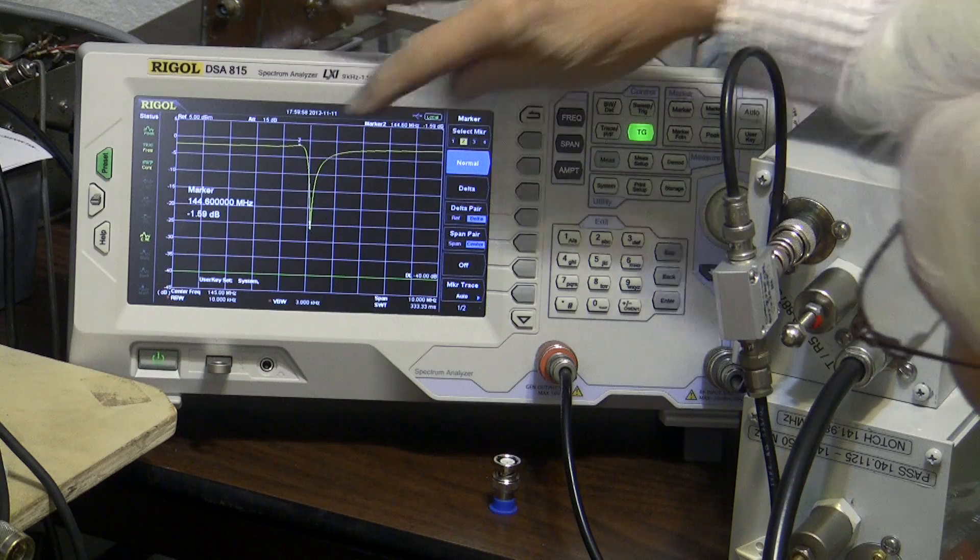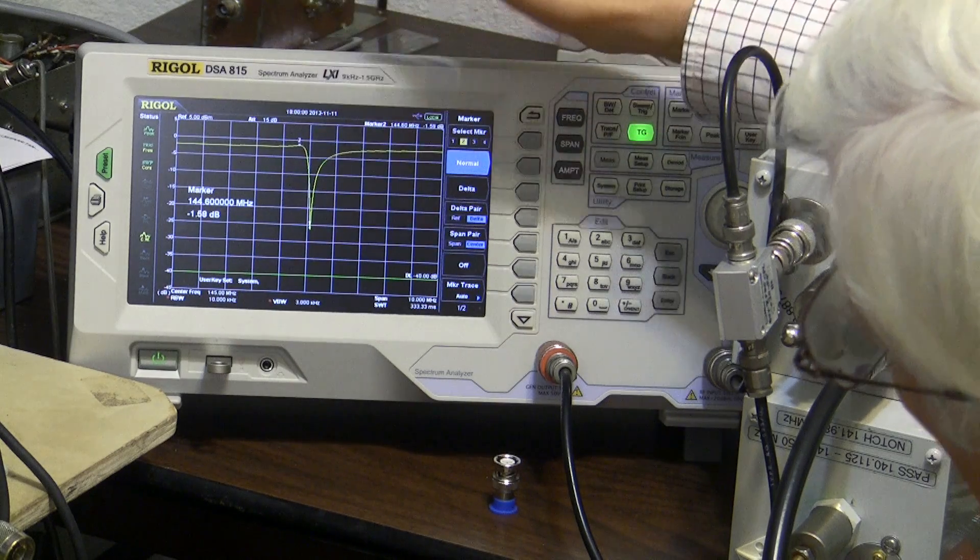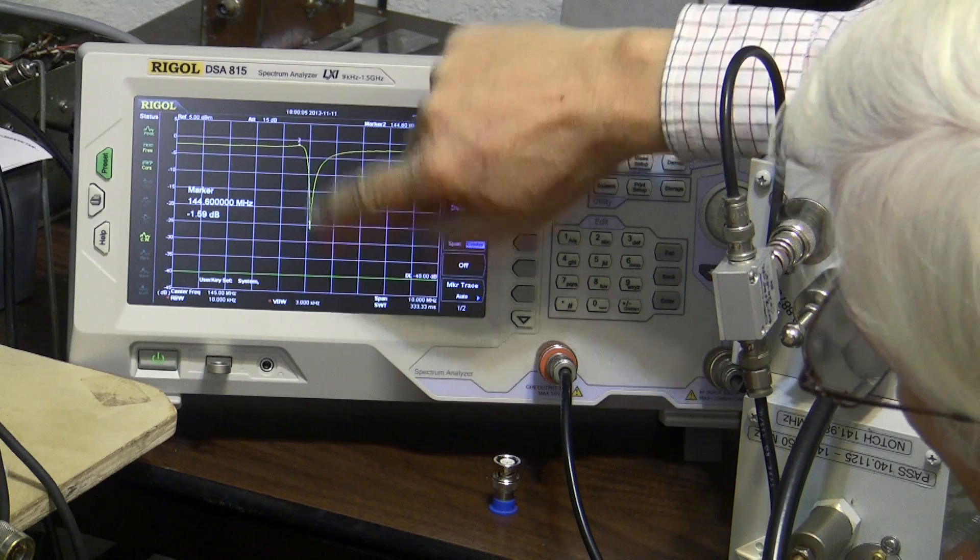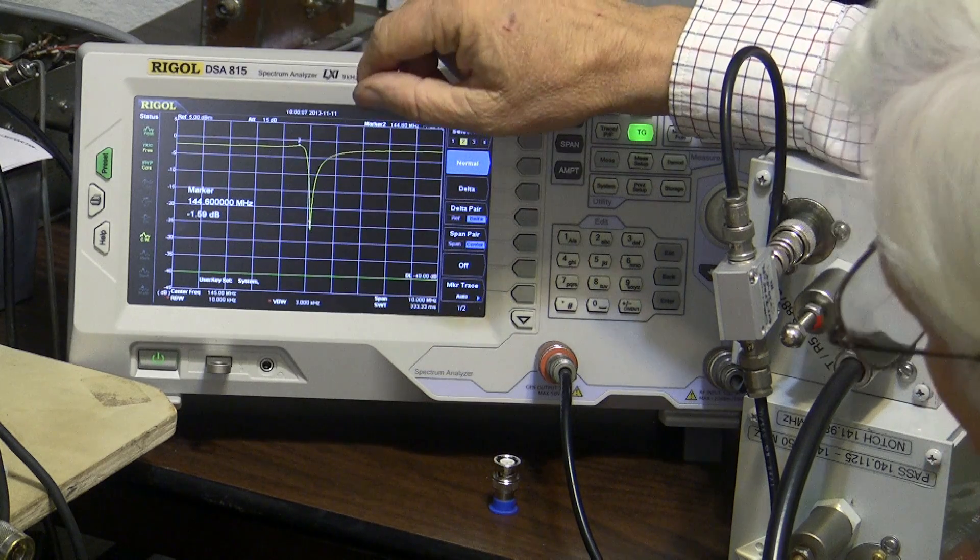So that shows the opposite curve of what we saw before, where we have a good return loss situation here and a poor one here, and that's what we would expect.